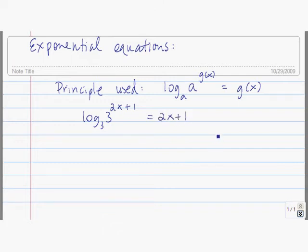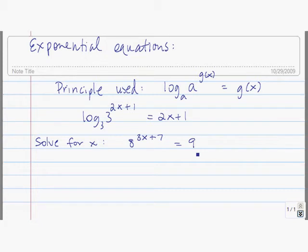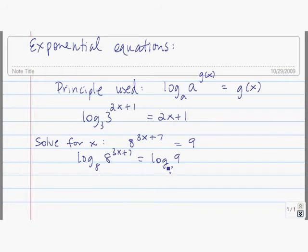Let's use this principle to solve an exponential equation. Let's solve 8 raised to the 3x plus 7 power is equal to 9. The first step is to take the log with base 8 of both sides. The reason we chose base 8 is because 8 is the base of the exponential that has x in the exponent.